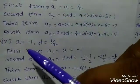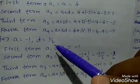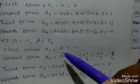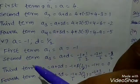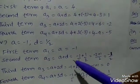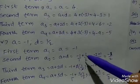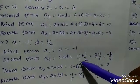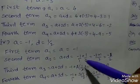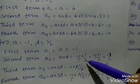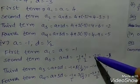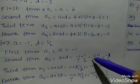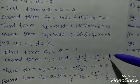Fourth problem: a equals minus 1, d equals 1 by 2. First term a1 equals a, that is minus 1. Second term a2 equals a plus d, that is minus 1 plus 1 by 2. Using LCM cross multiplication: minus 1 into 2 is minus 2, plus 1, over 2. So minus 2 plus 1 is minus 1 by 2.